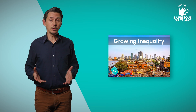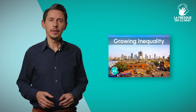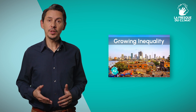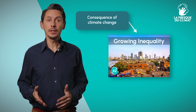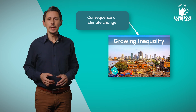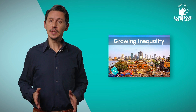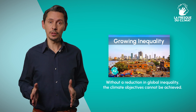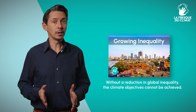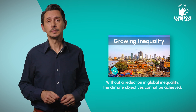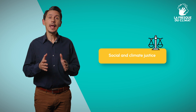In this video, I'm going to introduce the new O-Card of the Climate Fresque: Drawing Inequality. Why did we create this new O-Card? The latest IPCC report presents the increase in inequality as a consequence of climate change. It also mentions mitigation and adaptation measures. The IPCC stresses that without a reduction in global inequality, the climate objectives cannot be achieved. This card clearly highlights the issues of social justice and climate justice.